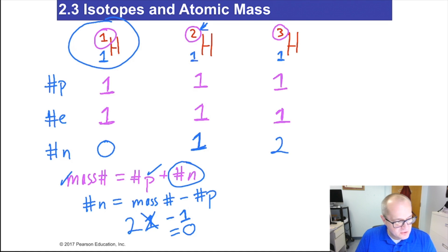For mass number two, this becomes a two, so neutrons are one. And three minus one is two. So these are isotopes of hydrogen, H-1, H-2, H-3. All of these are isotopes of hydrogen.